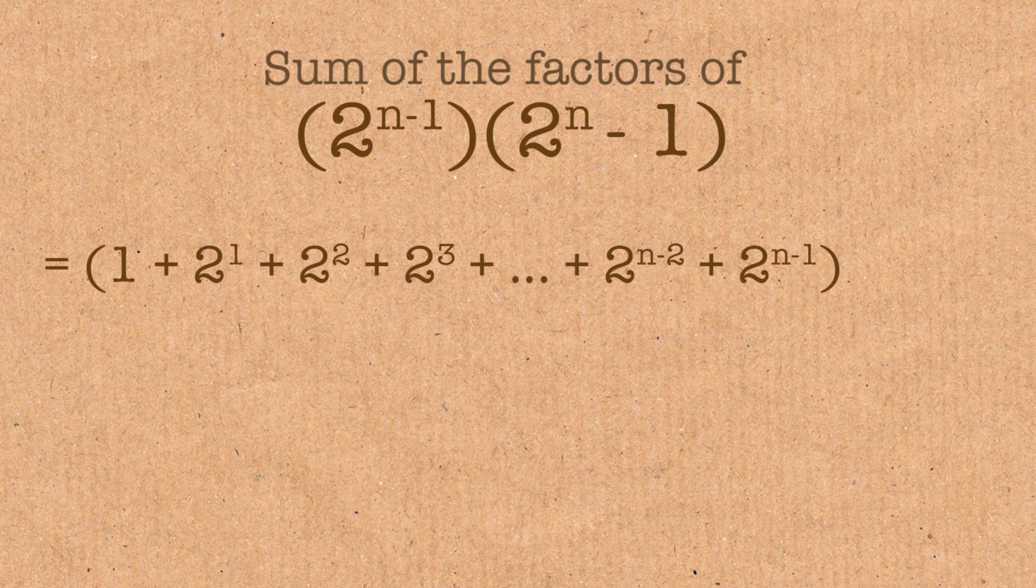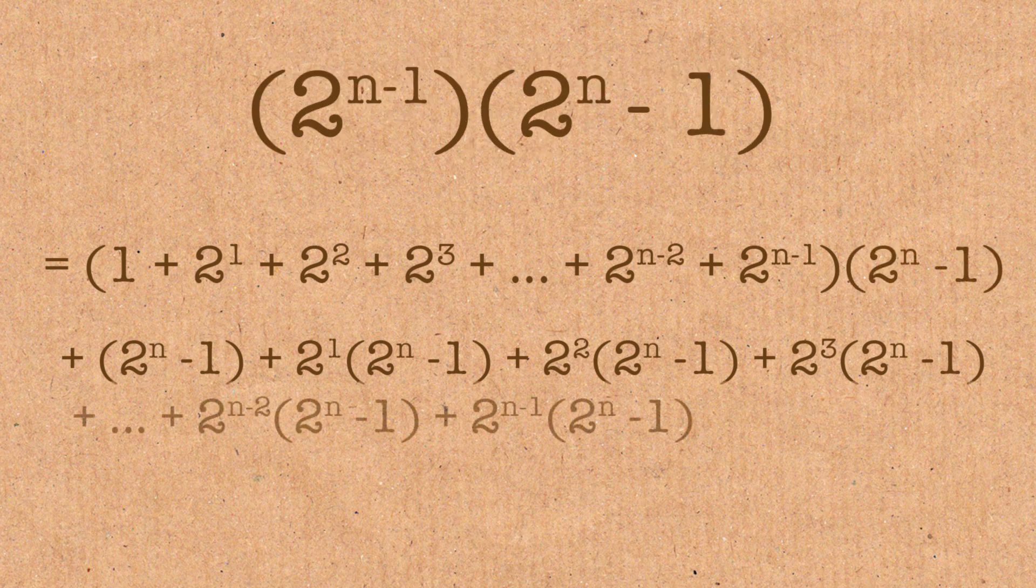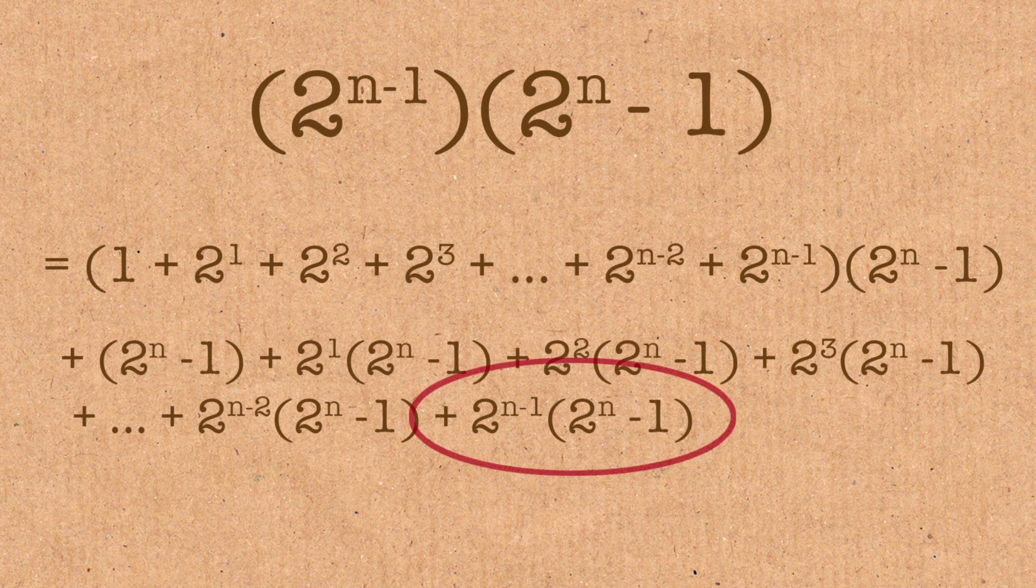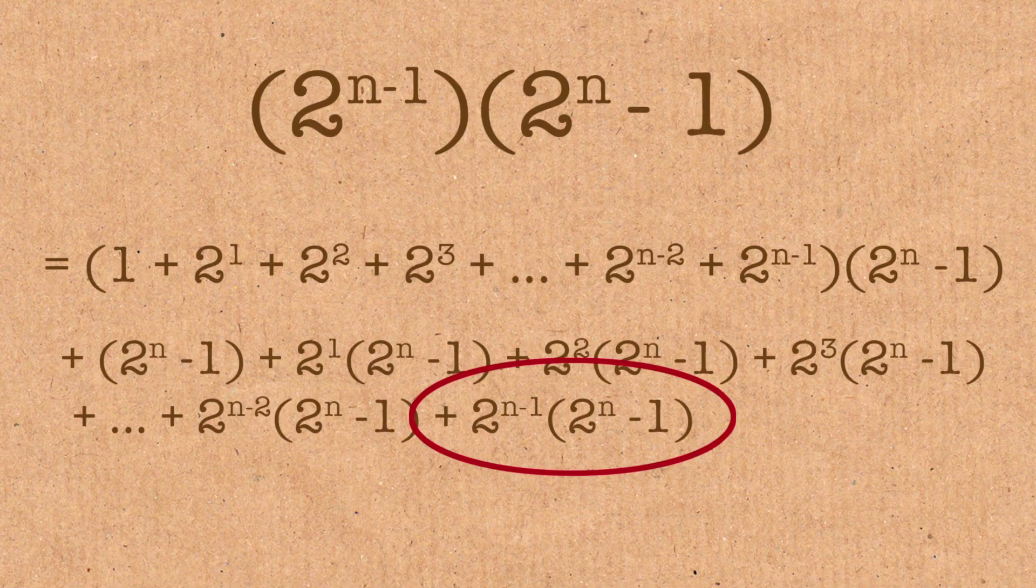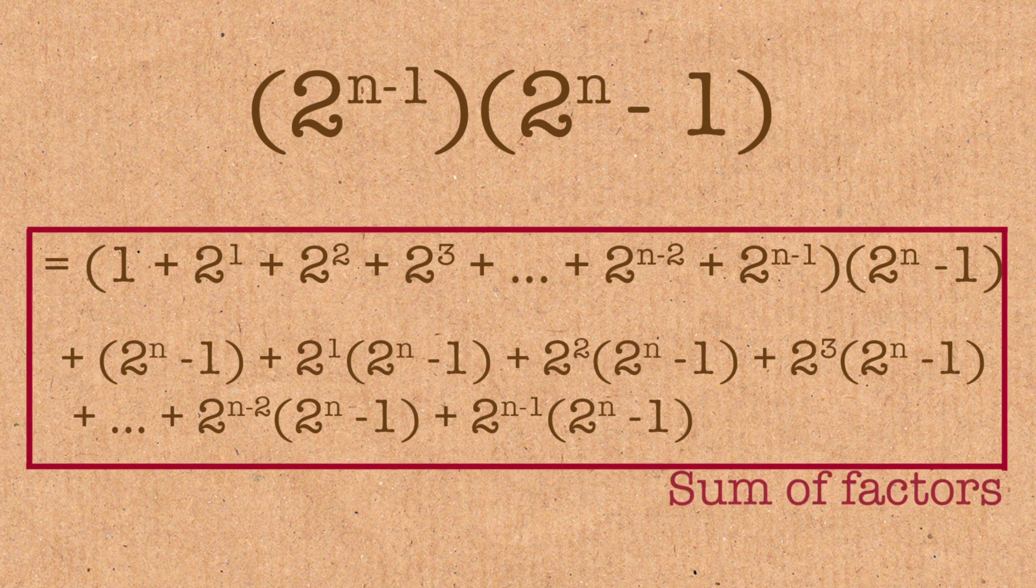So now we're going to have this. We're going to have 2 to the N minus 1, plus 2 to the 1 outside of 2 to the N minus 1, plus 2 squared outside of 2 to the N minus 1, plus all the way up, blah, blah, blah, blah, plus 2 to the N minus 2 outside of 2 to the N minus 1, plus 2 to the N minus 1 outside of 2 to the N minus 1, which is our original number again on the end of the list, just like we had over here. That's the equivalent of the same number on the very end. So that is the actual formula has appeared again. So what we really want to show is all the other ones add to the same as that. So we're going to show that by showing that all of them together equal twice that.